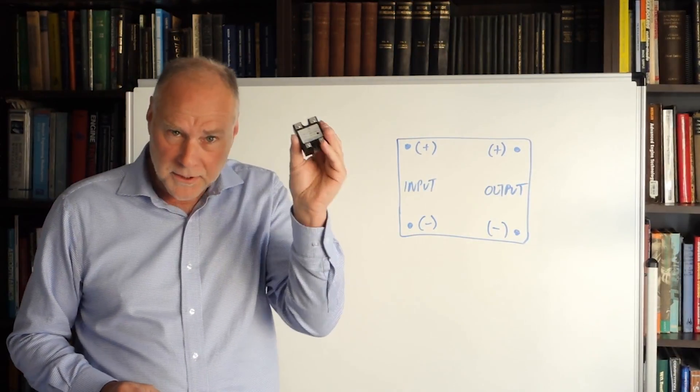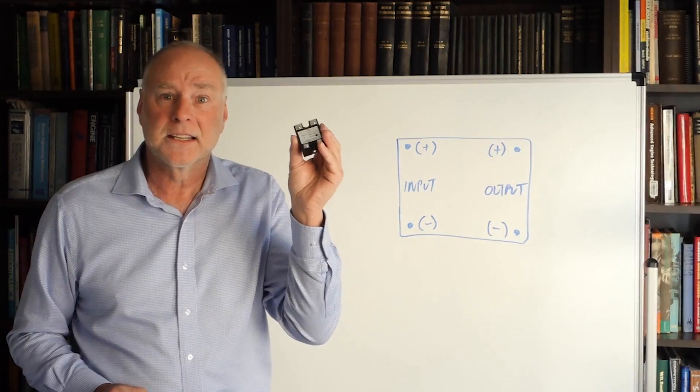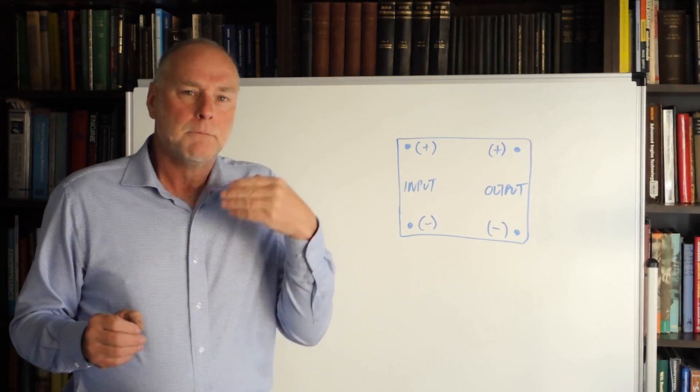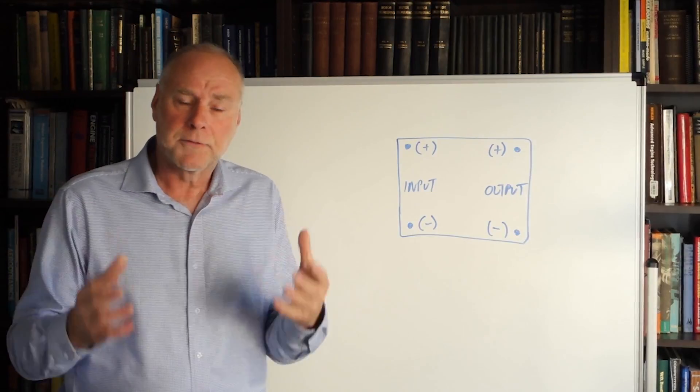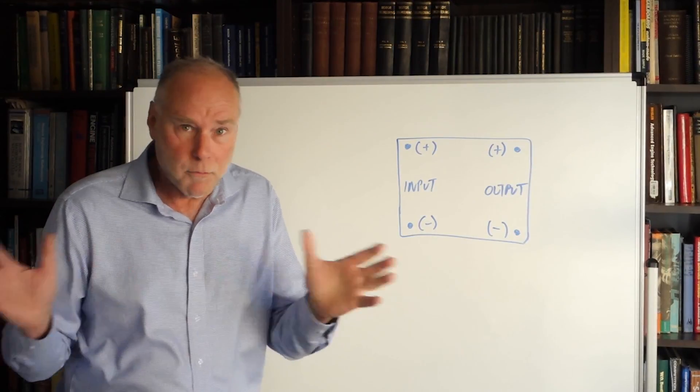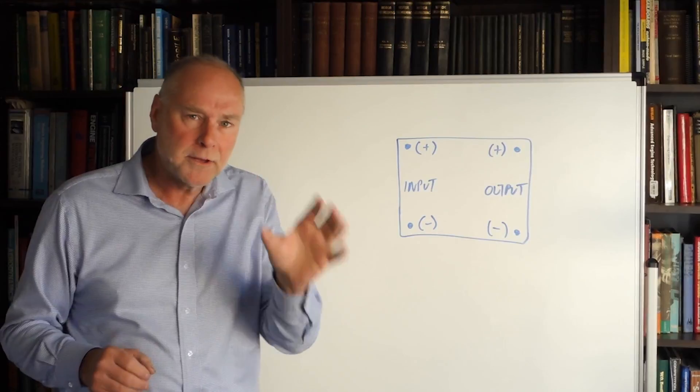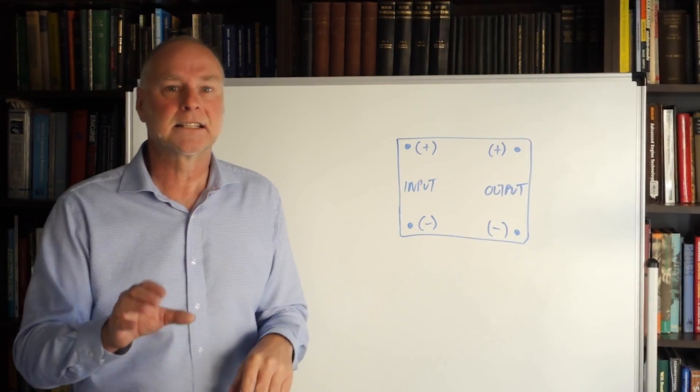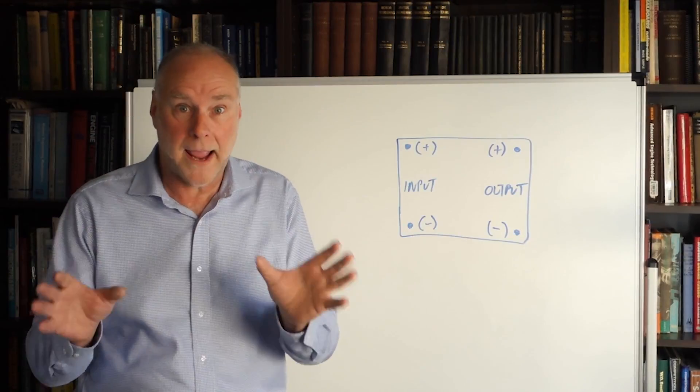Here's an example of a solid state relay, one that can be used in car electrical systems. That's an important first point. Many solid state relays are sold for use on mains voltages, and they won't work in a car system. So when you're selecting a solid state relay, make sure you get a DC-DC design, DC on both the input and the output.